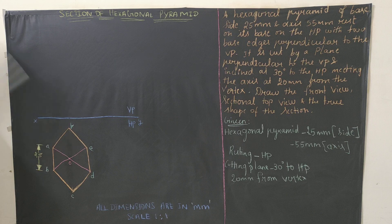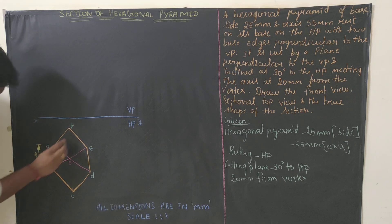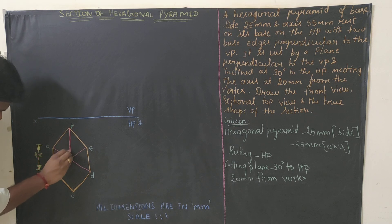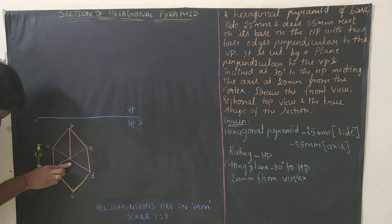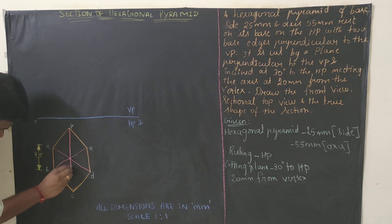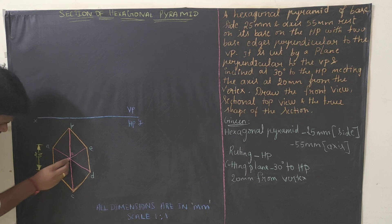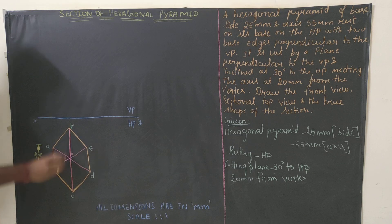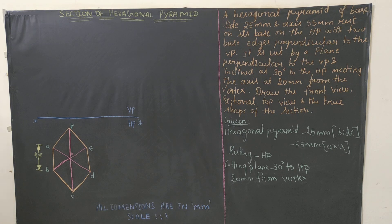Whatever we have drawn is the top view. Connect B to E and A to D to find the center. In a pyramid we have to give preferences for slant edges, so join O to A, O to B, O to C, O to D, O to E, and O to F — these are called slant edges. We have to show preferences for all slant edges.